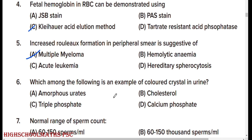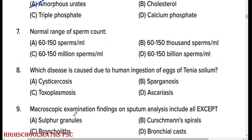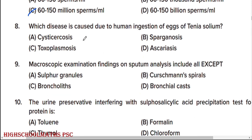Which among the following is an example of colored crystal in urine? Amorphous urates. Normal range of sperm count: option C, 60 to 150 million sperm per milliliter.